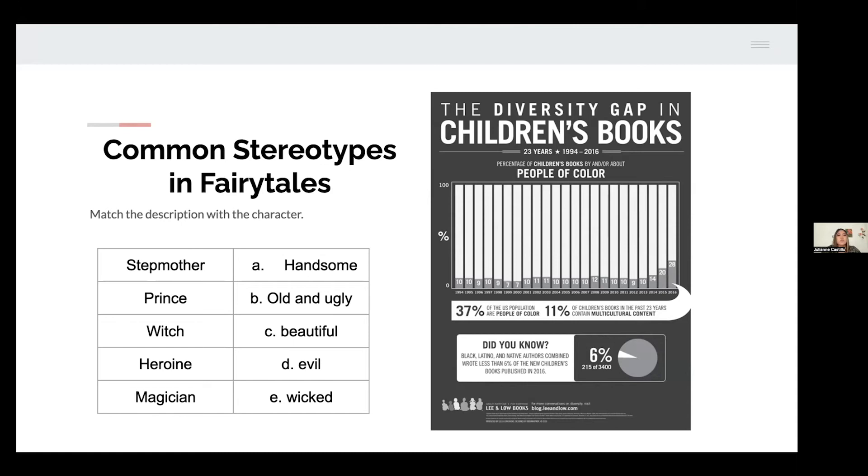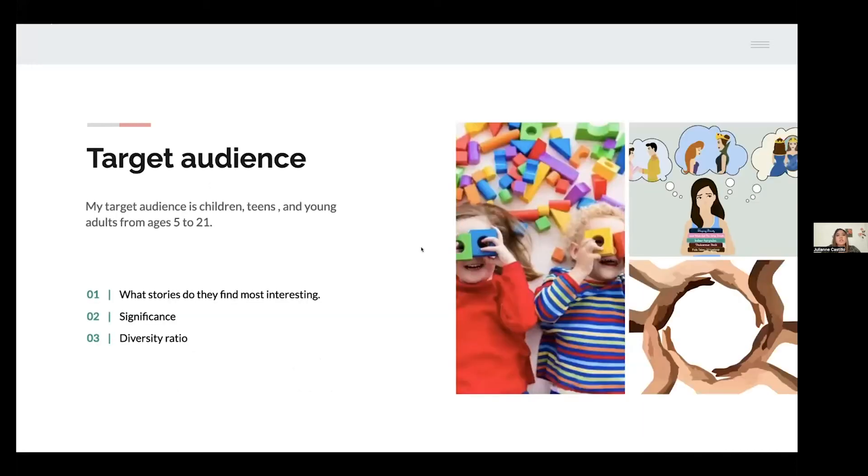Only 6% of children's books are written by Black, Latinx, Native American, or other minorities. Meaning that majority of story books are still written and told through a white perspective. My target audience is children, teens, and young adults, typically from ages 5 to 21.